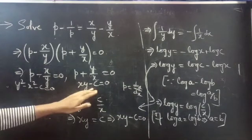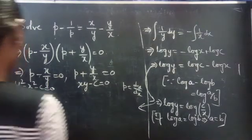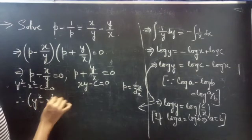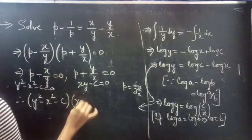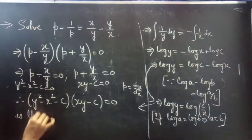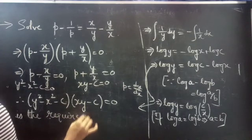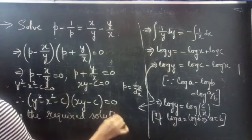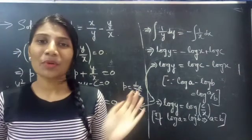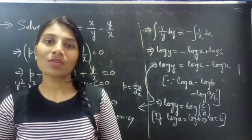The combined form of these two solutions gives the required solution for the given differential equation. Therefore, (y squared minus x squared minus c)(xy minus c) equals 0 is the required solution. This completes the problem. We have seen an example of Solvable for P method in this video. Hope you understood. We will see you in the next video — until then, bye-bye.